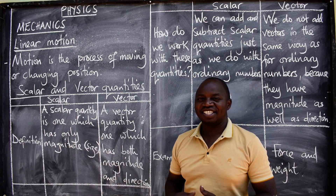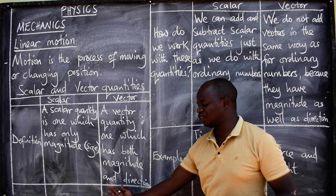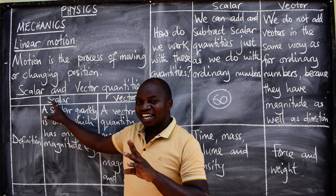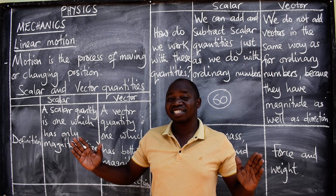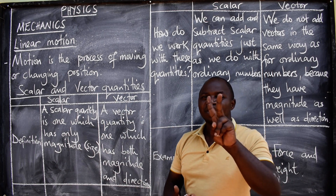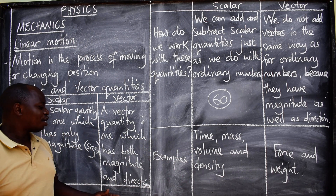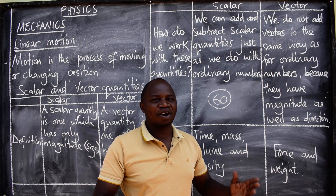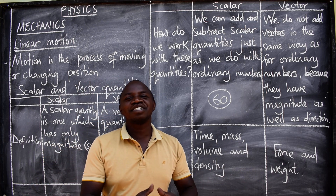But what do we mean by vector quantity? A vector quantity is one which has both magnitude and direction. Scalar has only one thing — magnitude, which is size or length. But for a quantity to be vector, it should have two things: it should have size (magnitude) and it should also show direction. A very good example is velocity and acceleration — those are vector quantities.